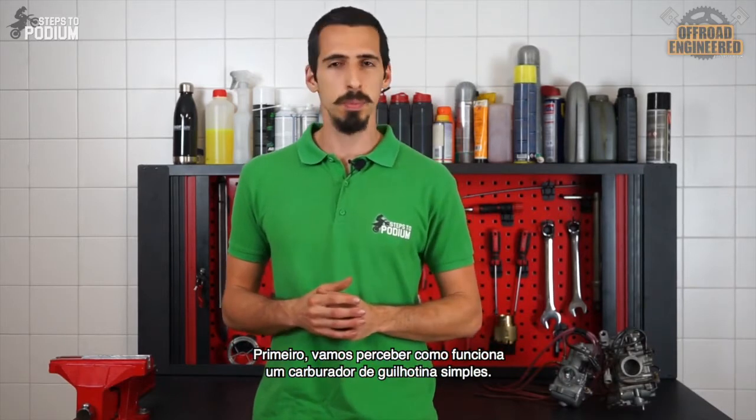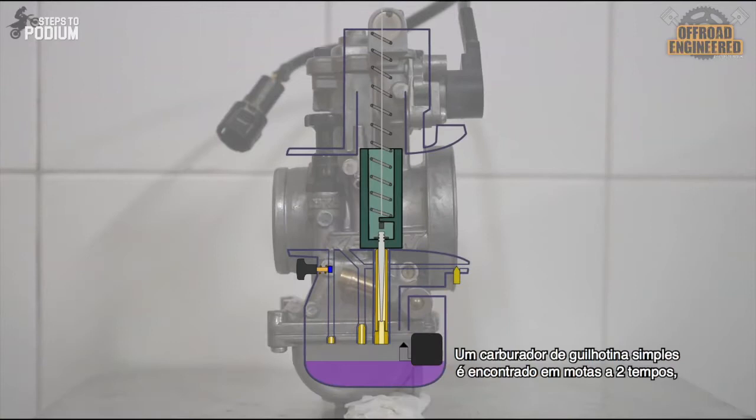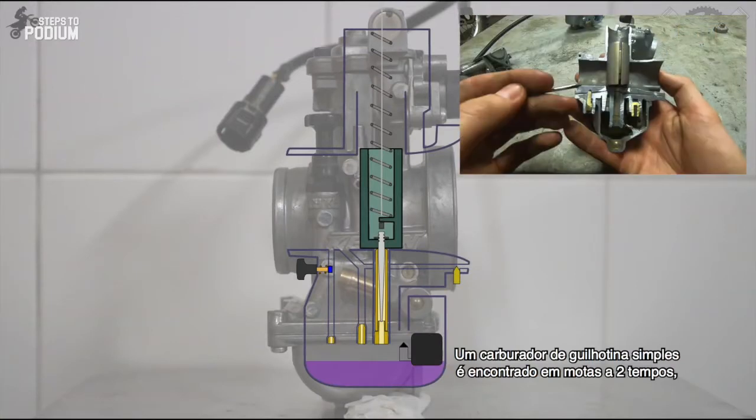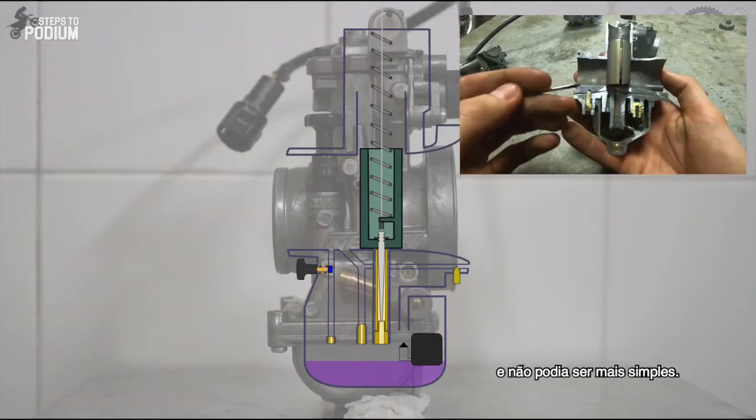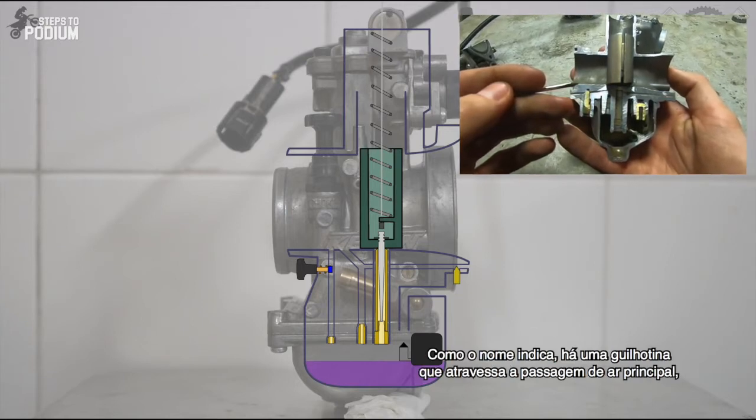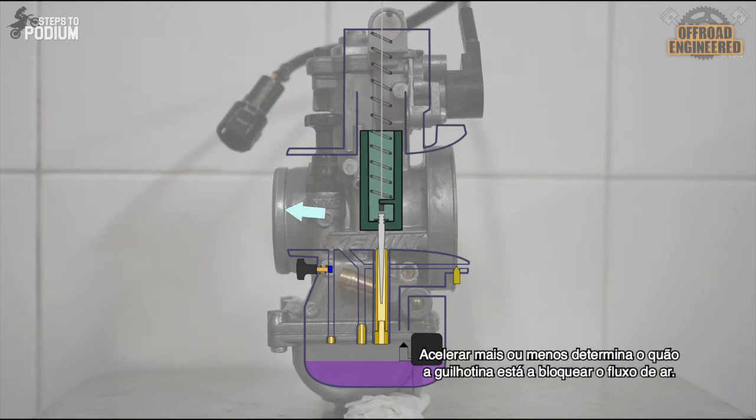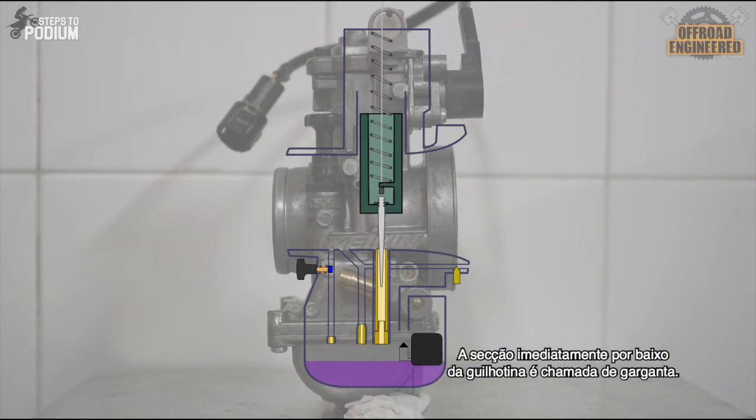Let's first take a look at the simple mechanical slide carb. A carburetor with a mechanical slide is found on two-stroke dirt bikes and the way it works couldn't be simpler. You have a mechanical slide crossing the main air passage, which is attached to the throttle cable. How much you twist the throttle determines how much the slide is blocking the airflow. The section right under the slide is called the throat.